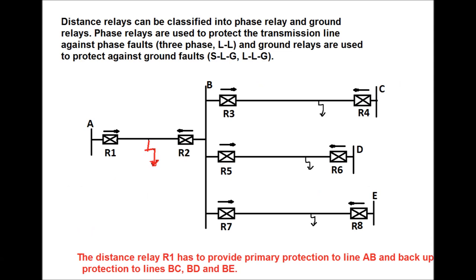Distance relays can be classified into phase relays and ground relays. Distance relay has both features for phase fault and ground fault. Phase relays are used to protect the transmission line against phase faults such as three-phase or double line faults. Ground relays are used to protect against ground faults such as single line-to-ground fault and double line-to-ground fault. In this figure, A is the substation from which a line goes to substation B. From B, lines go to substations C, D, and E.